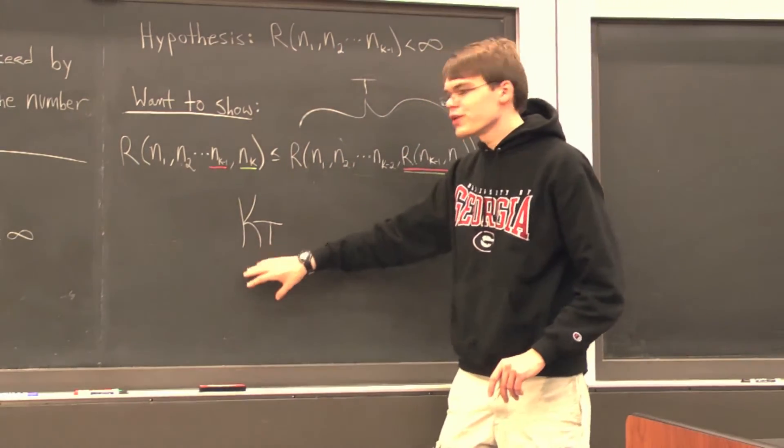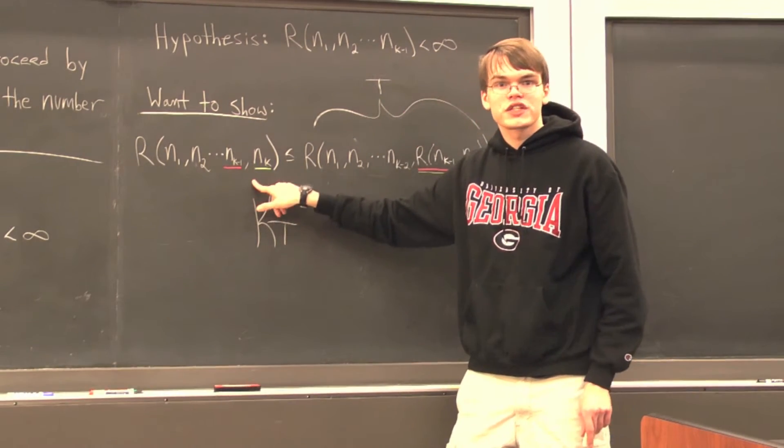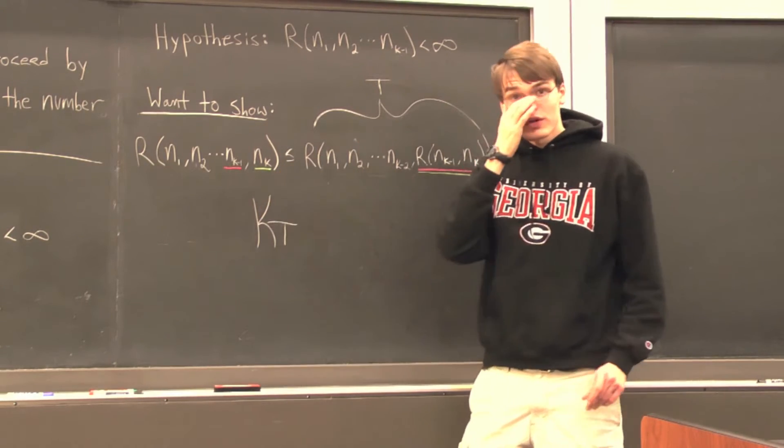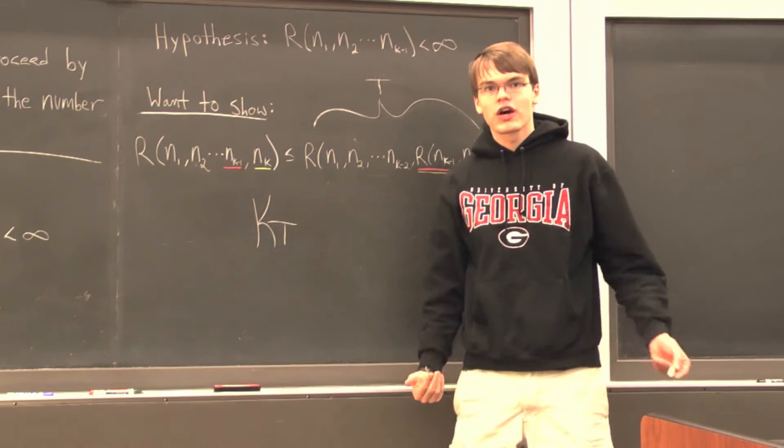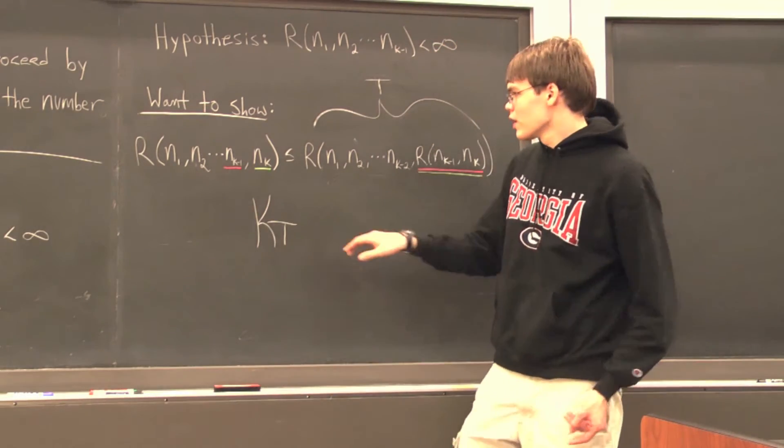And what I want to do with Kₜ is I want to give it an edge coloring using all k of these colors. Now, once we've assigned it an arbitrary edge coloring, what I want to do is temporarily become red-green colorblind.